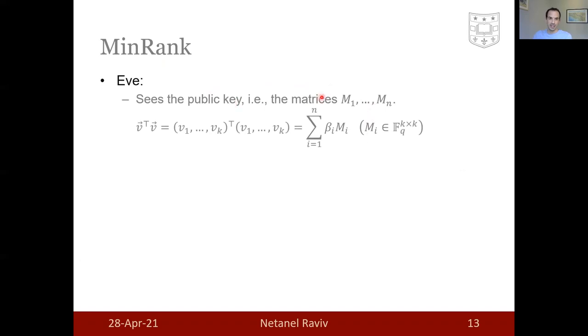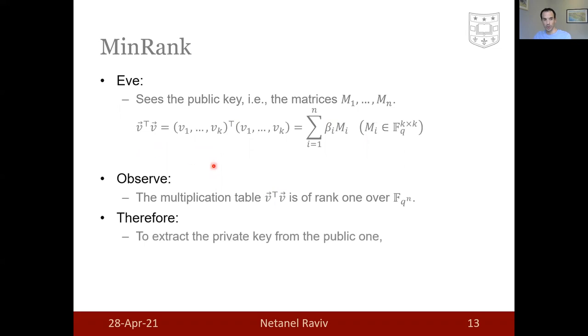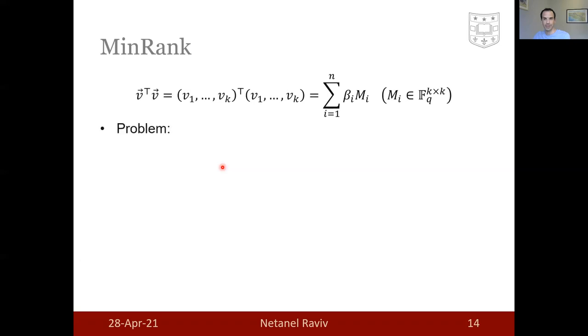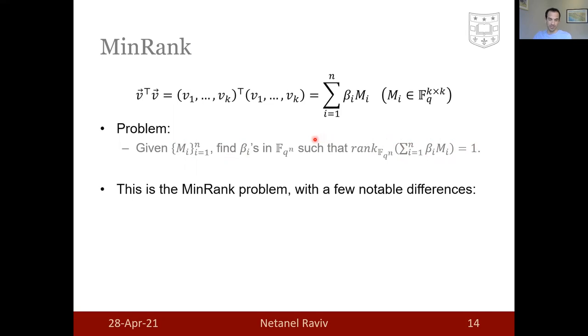So Eve sees these matrices that were constructed as such, where this is the multiplication table of the Sidon space. Observe that this multiplication table is simply a rank one matrix over the extension field. Therefore, to extract the private key from the public key, Eve needs to find a rank one linear combination of the M_i's where the coefficients come from the extension field. This will allow her to find the basis of the Sidon space and therefore to break the system. To state it formally, given the public key, one needs to find the beta_i's in the extension field such the respective rank of this target matrix is 1.